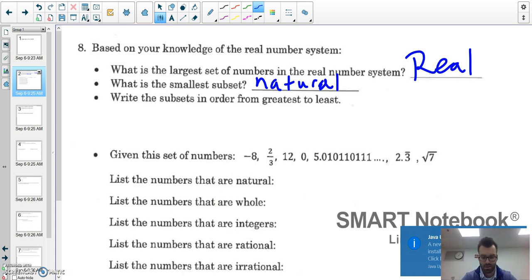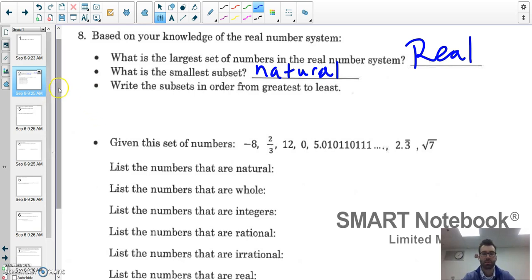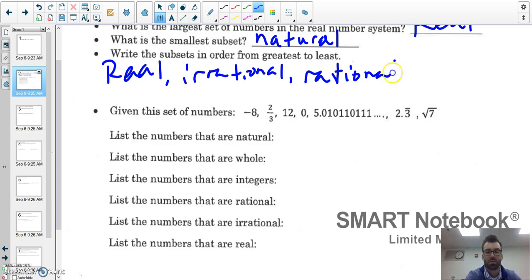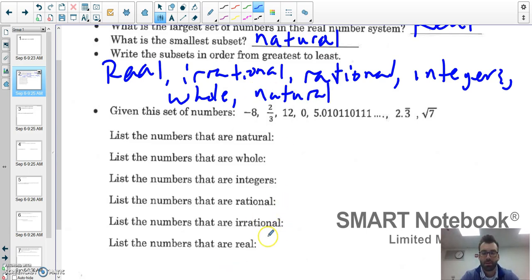List the subsets from the least from greatest to least. Well if you look down here they're actually in order for you, so you can just move backwards. It's going to be real, irrational, rational, integers, whole, and natural.